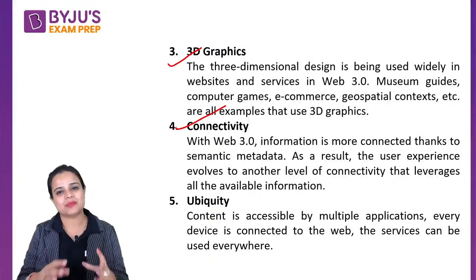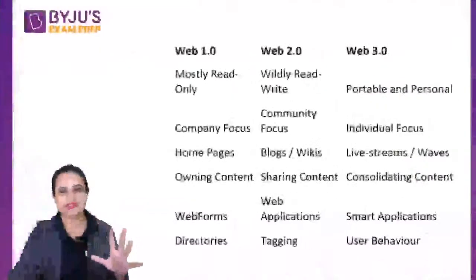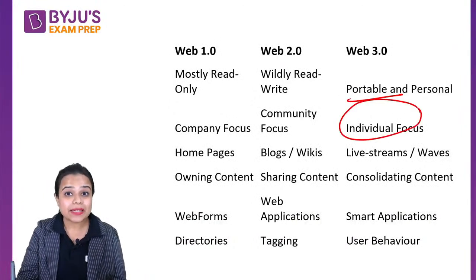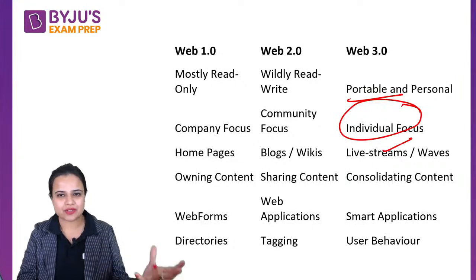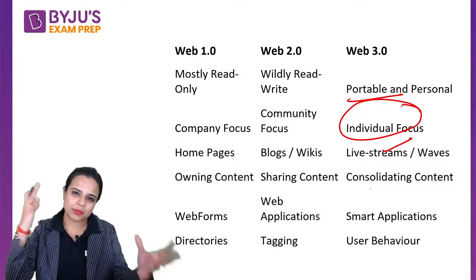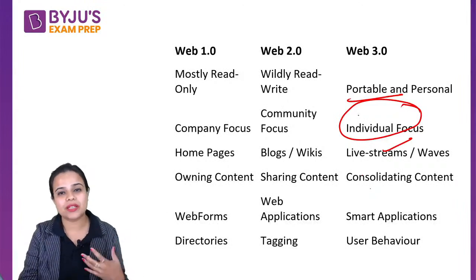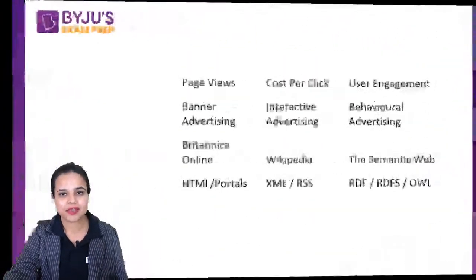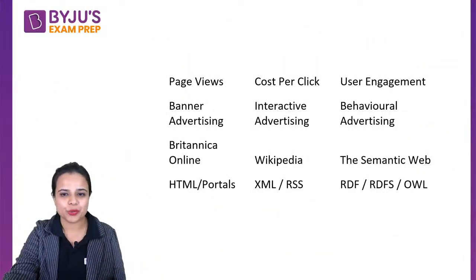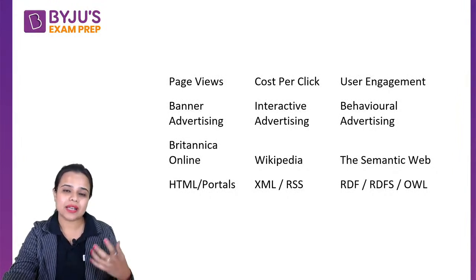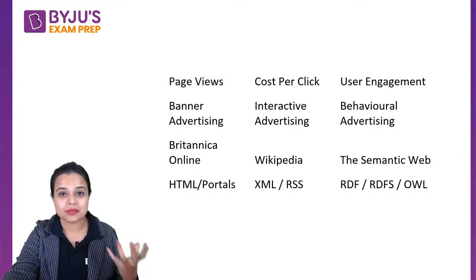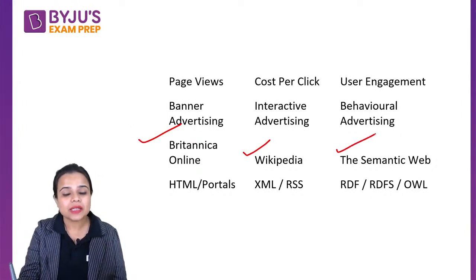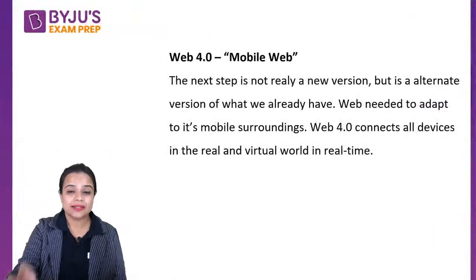Web 3.0 has become very portable and personal with an individual focus. Live streaming is everywhere — people can join rooms, give sessions, and interact. Smart applications analyze user behavior, not just tagging like in Web 2.0, but behavioral advertising and user engagement. So if Britannica represented Web 1.0 and Wikipedia represented Web 2.0, Web 3.0 is more about the Semantic Web and personalized intelligence.